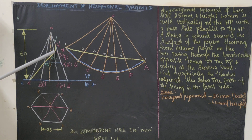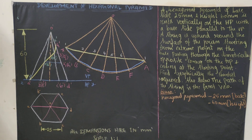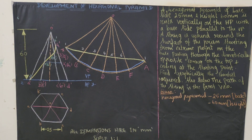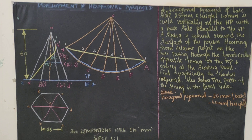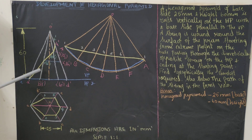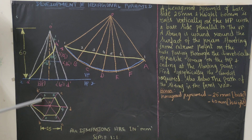Since we get both visible and hidden points on the same line, we focus only on the visible part of the string. Join from 1 dash to 2 dash, 2 dash to 3 dash, 3 dash to 4 dash, back to 5 dash, then 6 dash and returning back. This is the path of the string in the front view. Now trace the points in the top view: 1 is between O and A, 2 is between O and B, and so on.